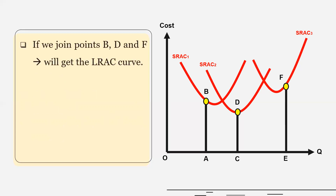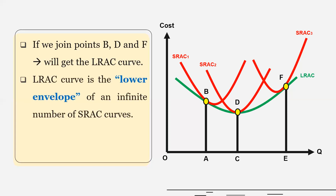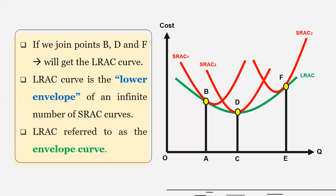Now, if we join these points B, D, and F, we will get the long-run average cost curve. See this green curve — it represents the long-run average cost. So the long-run average cost curve is the lower envelope of an infinite number of short-run average cost curves, and therefore it is referred to as the envelope curve.